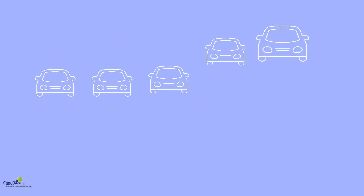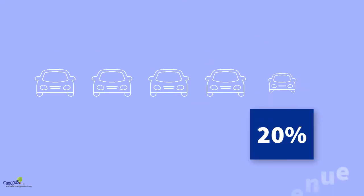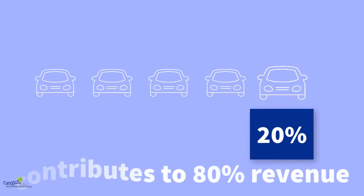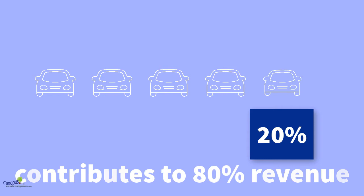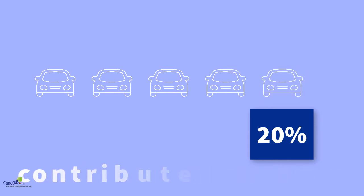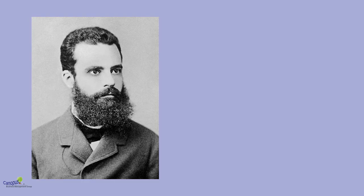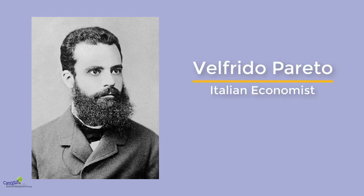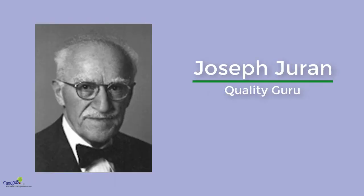For example, you can concentrate on 20% of the products in your portfolio that contribute to 80% of your revenue. This principle was developed by economist Wilfredo Pareto and popularized by 20th century quality guru Joseph Juran.